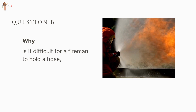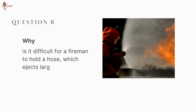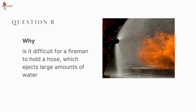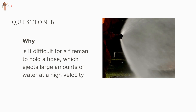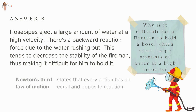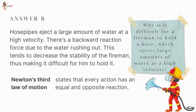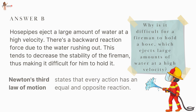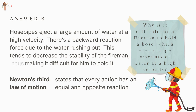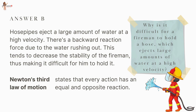Explain why it is difficult for a fireman to hold a hose which ejects large amounts of water at a high velocity. Newton's Third Law states that every action has an equal and opposite reaction. As water rushes out of the hose with high velocity, the reaction force acts on the fireman in the opposite direction. This tends to decrease the stability of the fireman, making it difficult for him to hold the hose.